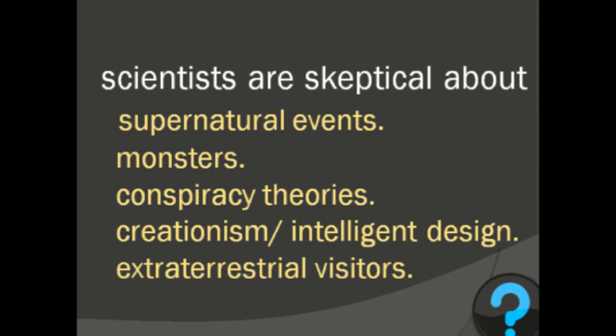Scientists are also skeptical about all kinds of phenomena — those are events and things that are happening in the natural world. On the screen here are a list of quite a few different ones, like supernatural events. Supernatural events could be poltergeists. Monsters could include the Loch Ness Monster. Conspiracy theories, intelligent design, and visitors from other planets are all things that scientists are skeptical about because there's very little evidence that anything of these types have actually occurred. That's why scientists are skeptical — because there's no evidence to support them.